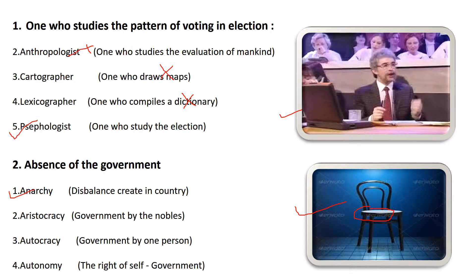Aristocracy means government by the rich nobles — a government run by rich people. Autocracy means government by one person — if one person runs the government, that is called autocracy. Autonomy means the right of self-government — a government run by itself, making its own decisions. That is called autonomy.